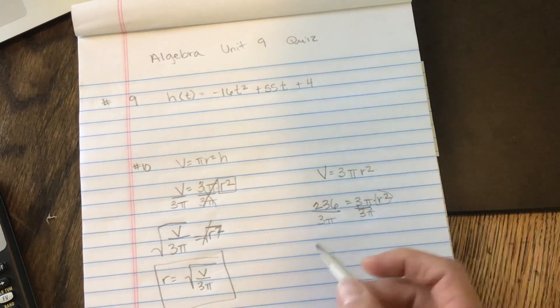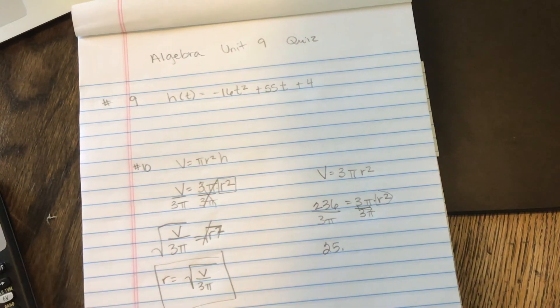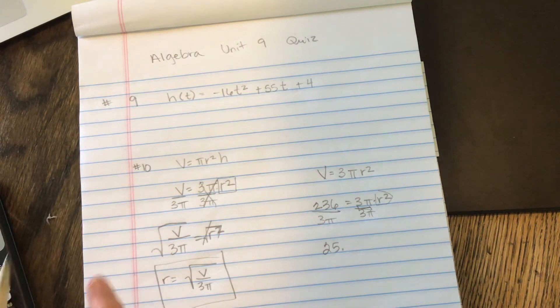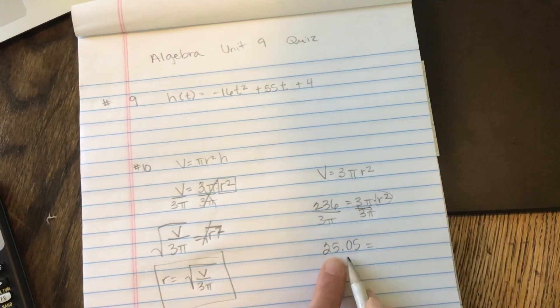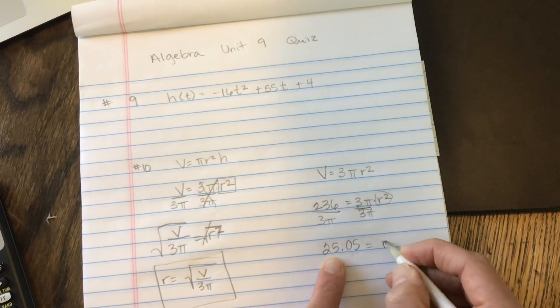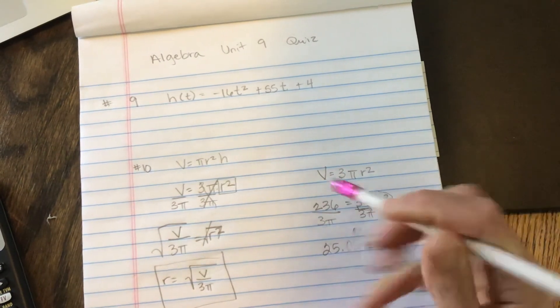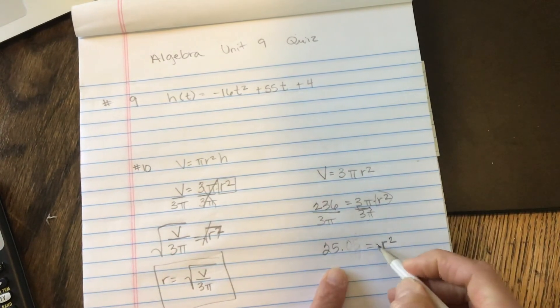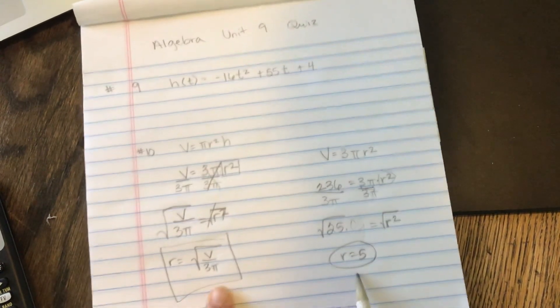And you'll get 25.05, something like that. You're probably going to be a little different if you're using pi. You'll definitely get a different decimal and that's okay because we're rounding to the nearest whole number. So I'm actually going to take that off because it doesn't even matter. And again, solving for R, we're going to square root. We're going to square root and our radius would be five then. So there are the two answers for number 10.